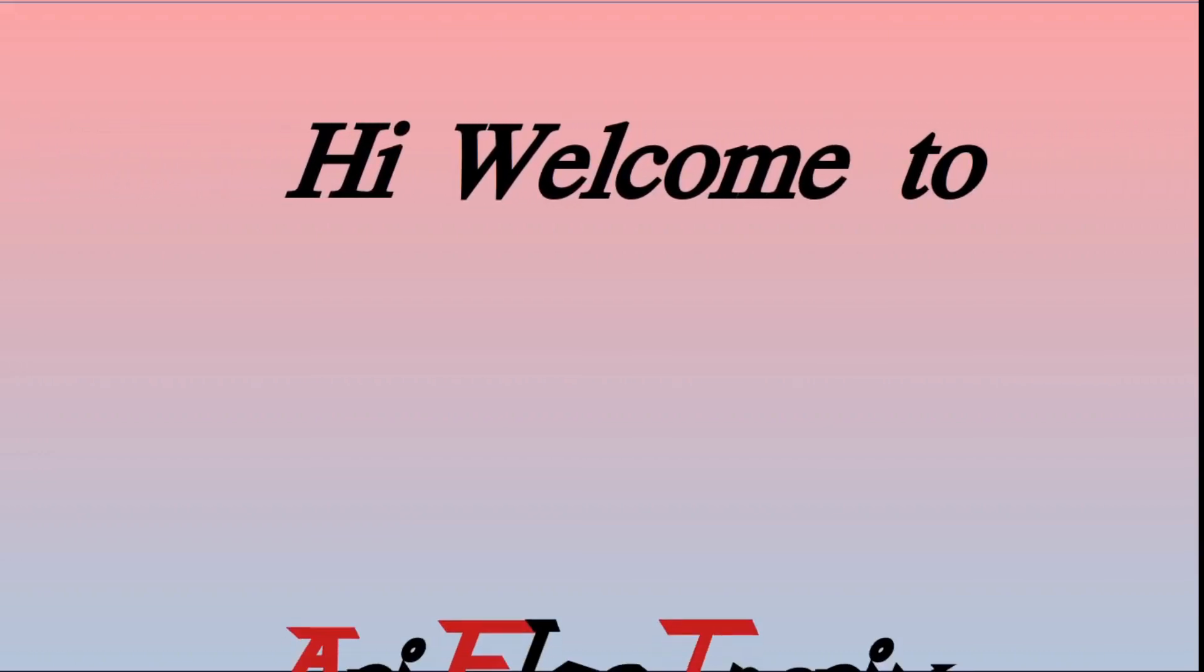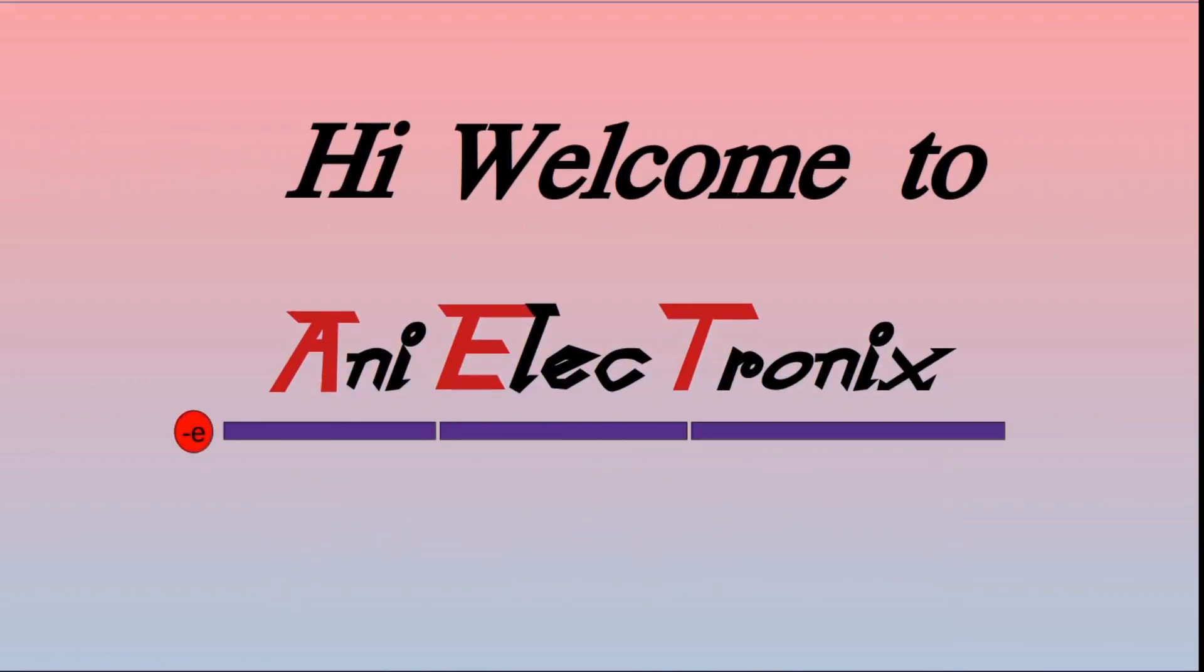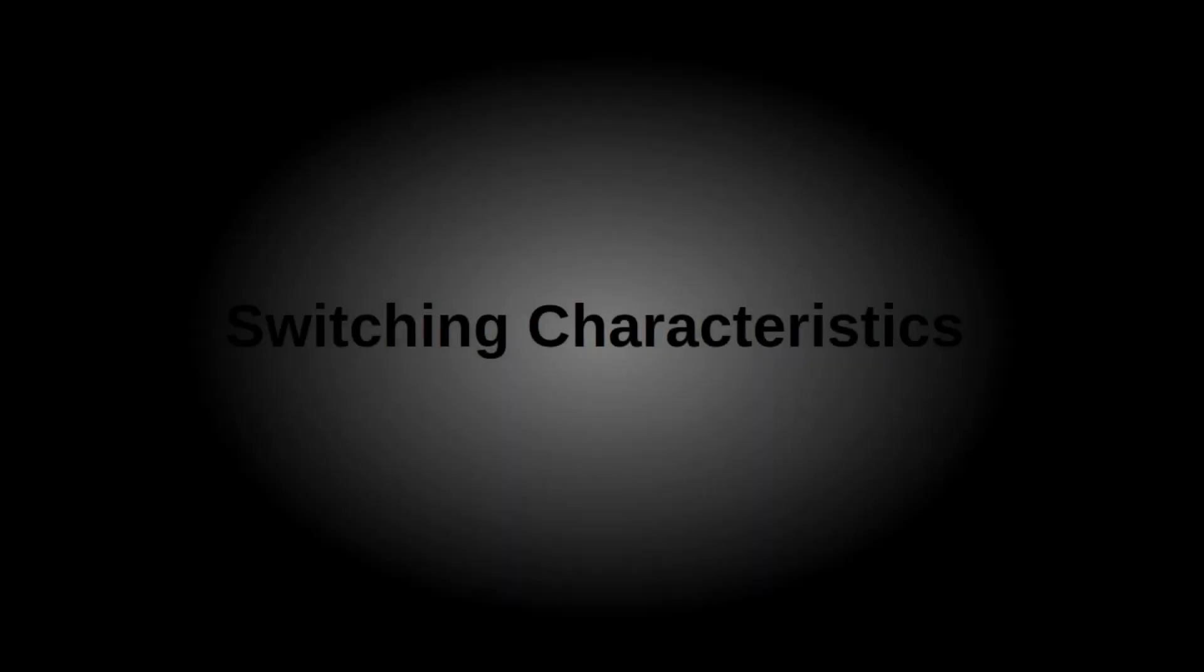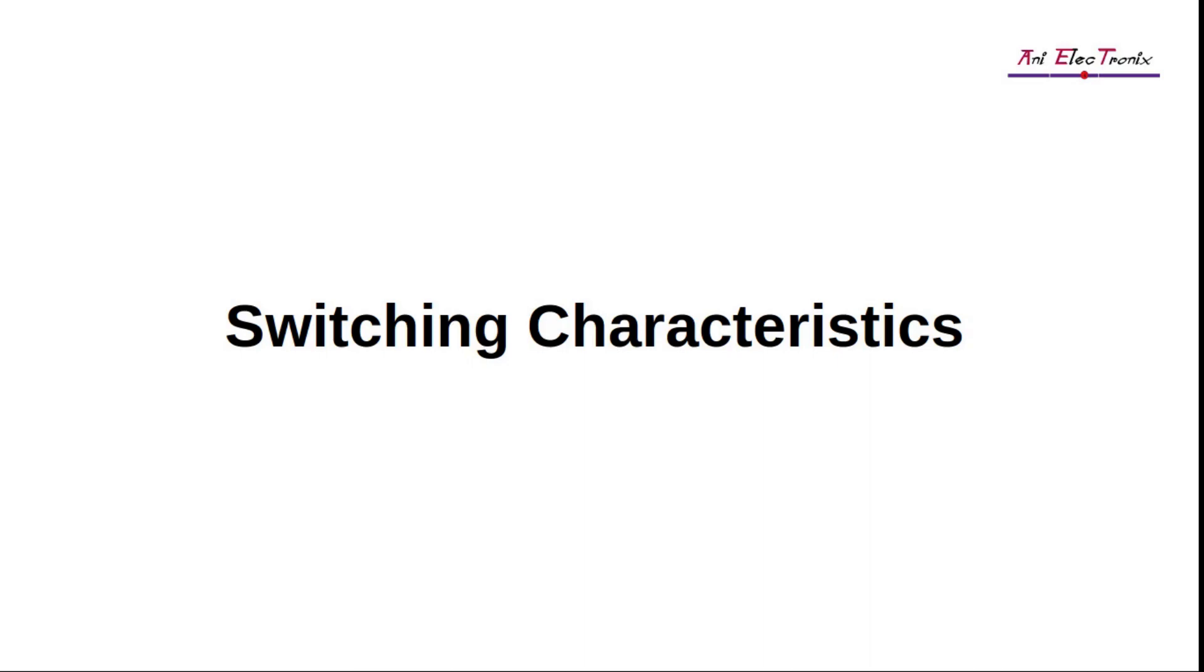Thank you for visiting Annie Electronics. In our previous video, in episode 6, we explained how a PN junction diode in forward bias acts as a closed switch and in reverse bias behaves as an open switch. In this episode we will explore the switching characteristics of a PN junction diode.